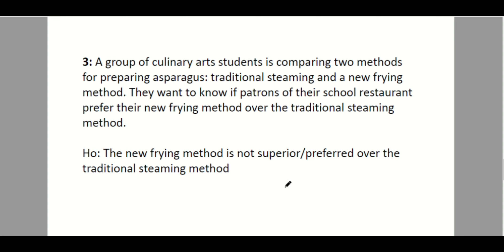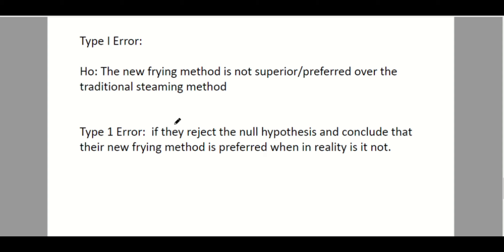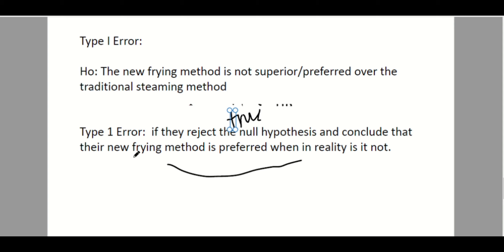In the type 1 error, we reject the true null hypothesis. This null hypothesis is true, but we reject it because we committed a type 1 error. Since we rejected it, our conclusion is the opposite: the new frying method is preferred or superior over the traditional steaming method. So we conclude that the new frying method is preferred when in reality it is not.